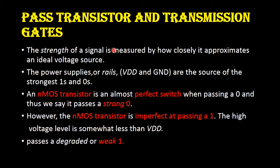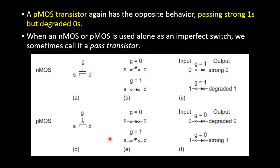If we are using in a circuit an NMOS transistor or PMOS transistor alone, then it is called as a pass transistor. There is an important characteristic for NMOS transistor: if you are using an NMOS transistor, it will act as a perfect switch when passing 0. That means it will pass strong 0 but degraded 1 — that means weak 1. So NMOS transistor passes strong 0 and weak 1.